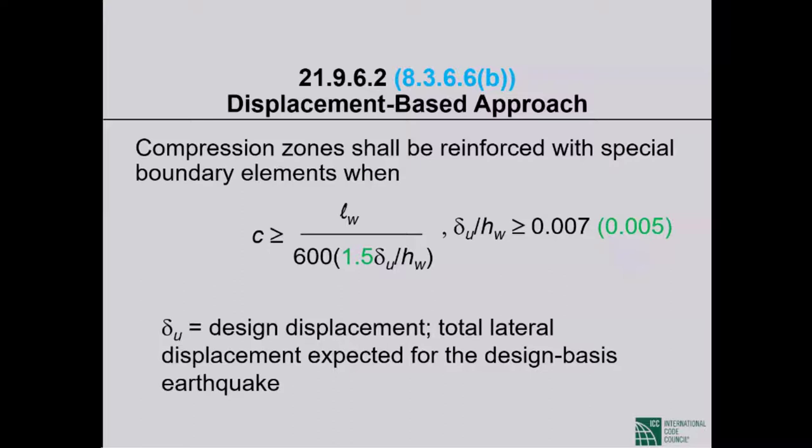There is a stipulation that if delta sub U over H sub W is very low — meaning the shear wall is very stiff — we will not take it any lower than 0.007 for computation purposes.